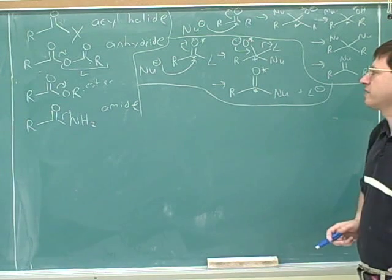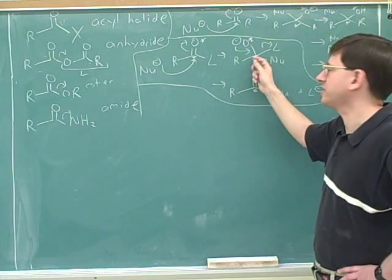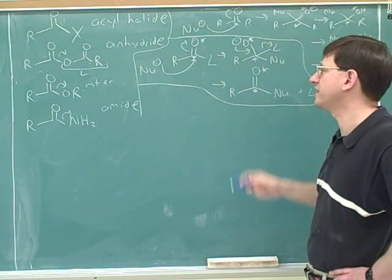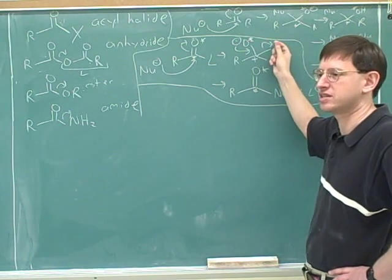Also it's easy to lose track of who the leaving group is. When you look at this it's obvious that this is the leaving group, but when you look at something tetrahedral like this it can be confusing who the leaving group is. You need to have identified in your mind ahead of time who the leaving group was going to be so we know who's going to leave at this step.